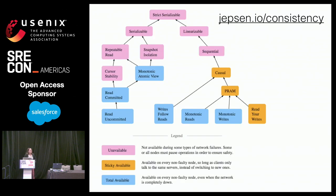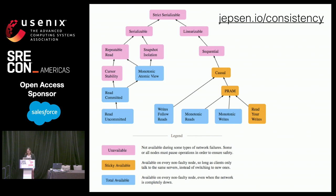There are a lot of different ways to define consistency. Kyle Kingsbury mapped out all the different definitions and what they each logically imply — I highly recommend checking out that blog post. Consistency is not a binary state; it's a spectrum, and we have to be really precise about what state we're talking about.